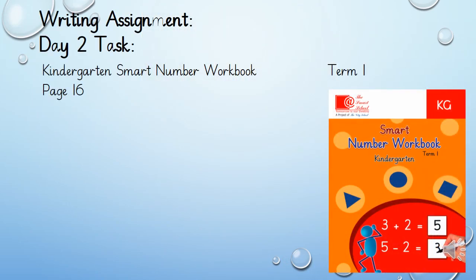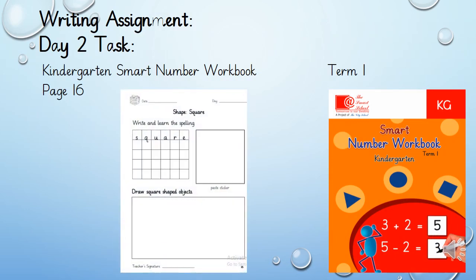For the writing assignment Day 2 task, take out your smart number workbook and open page number 16. On this page, you have to write and learn the spelling of square. Draw square-shaped objects and paste the sticker of square, which you can find on the last page of your workbook.